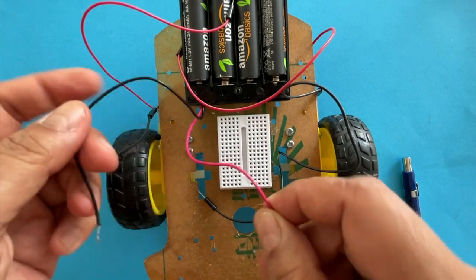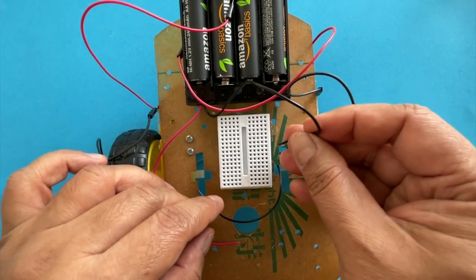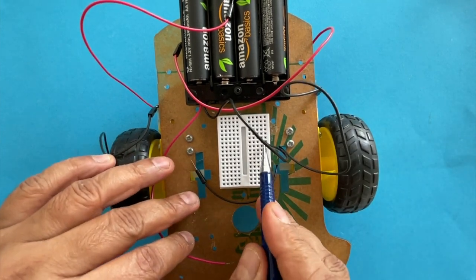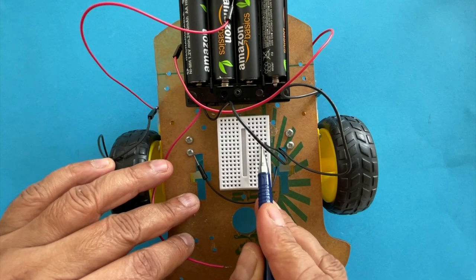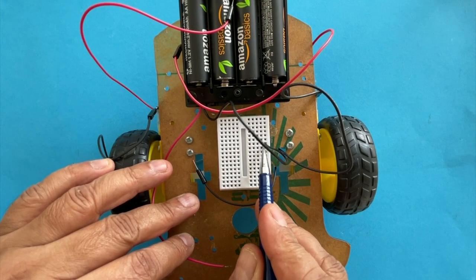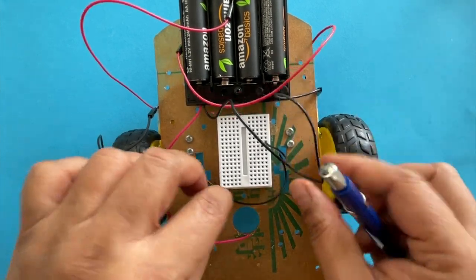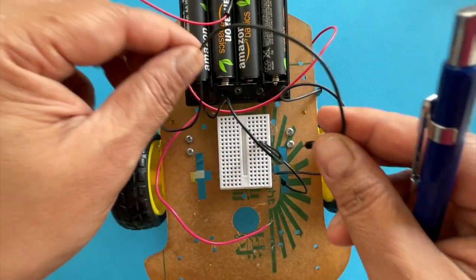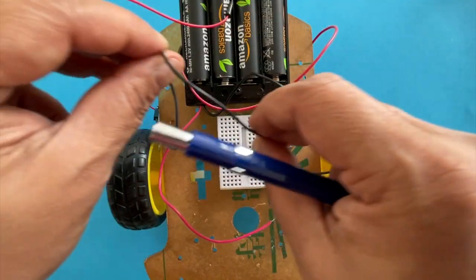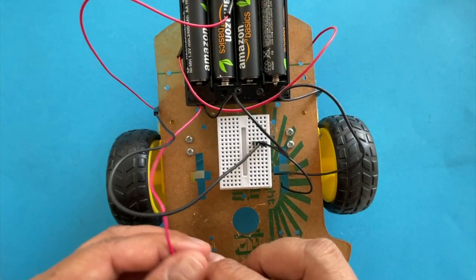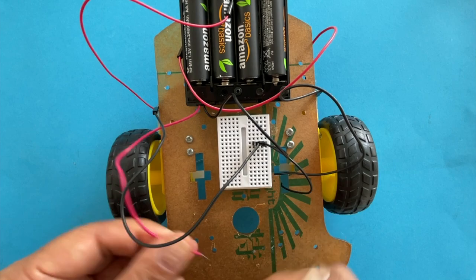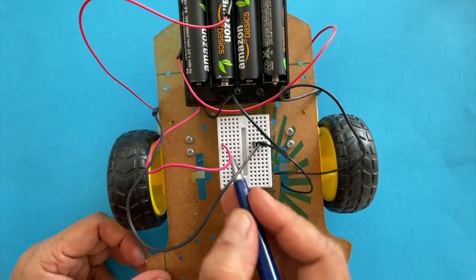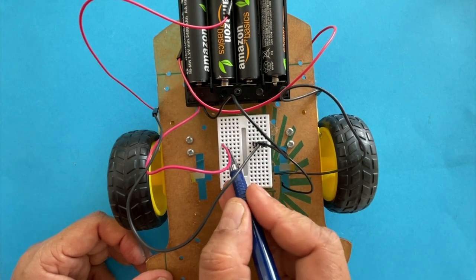To make connections using a breadboard, take the negative wire from the battery and insert it into one of the holes. Now the remaining four holes in this line are all connected to the negative terminal. Take the black wire from one of the motors and insert it into one of these holes. Likewise, take the black wire from the second motor and connect it in the same line. Do the same for the positive terminal of the battery. Put the wire into a different line and connect the red wires from the two motors to the same line.